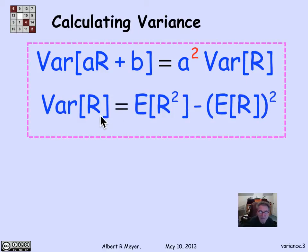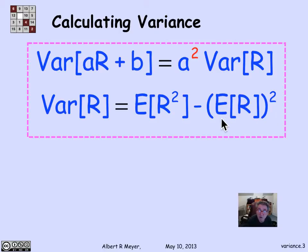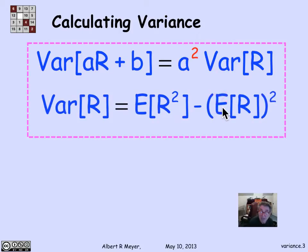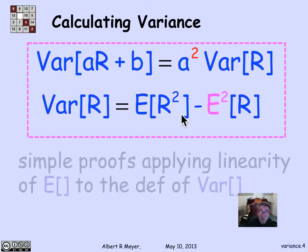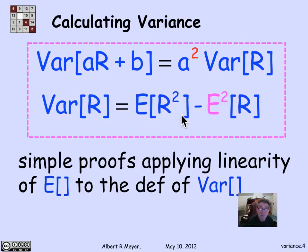Another basic and often convenient rule is that variance can be expressed as the expectation of R squared minus the square of the expectation of R. The square of the expectation of R comes up so often there's a shorthand: E²(R), meaning (E[R])². We'll use this rule all the time. The proof again involves just linearity of expectation and algebra.